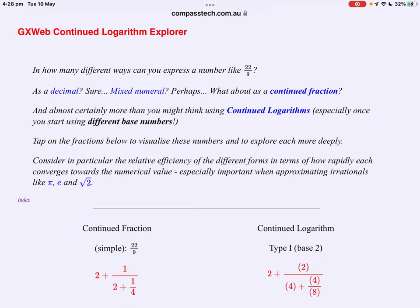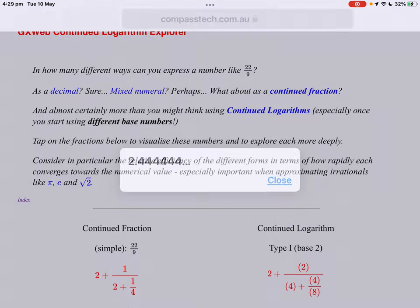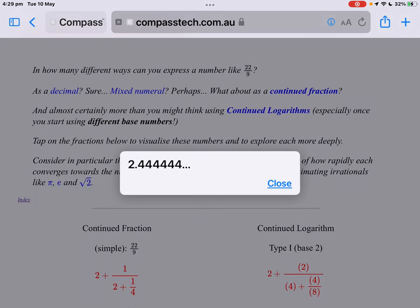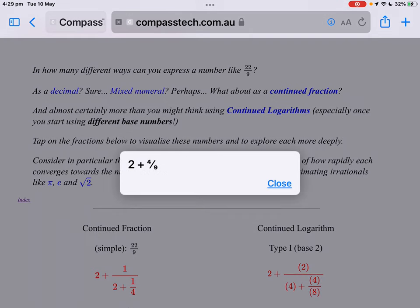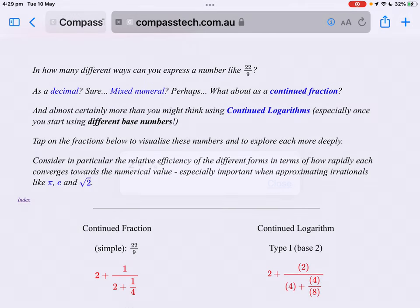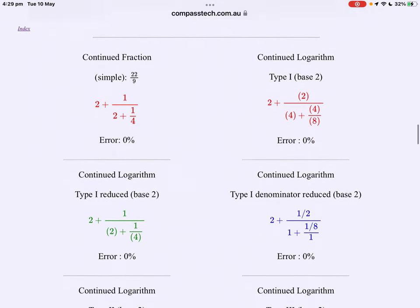In how many different ways can you express a number like 22 over 9, for example? As a decimal? Sure, no problem. A mixed numeral, perhaps? Two and four ninths. What about as a continued fraction, as in the example shown here?